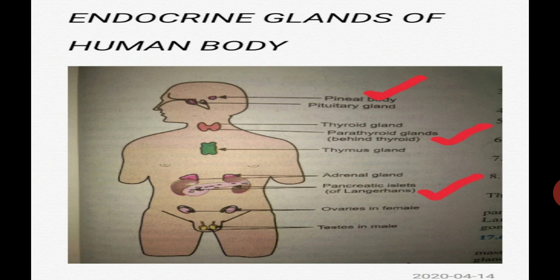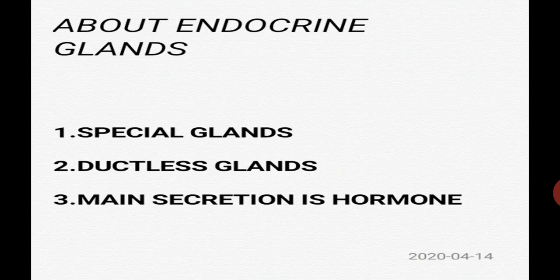You have now seen all types of glands, and all these glands are called endocrine glands. Endocrine glands are a special type of gland in our body — they are ductless glands because they don't have a duct. Their main secretion is a hormone. Because they don't have a duct, hormones are directly discharged into the bloodstream, and the blood carries the hormone toward its target organ.